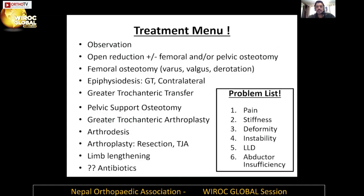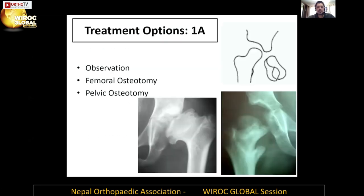This is the treatment menu based on the problem list. There are various treatments and we will delve into each one and the indications as we move along. For type 1a — a hip that is reduced and the femoral head is intact — treatment options are observation, femoral osteotomy, or pelvic osteotomy.